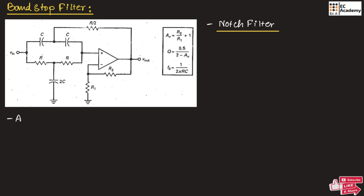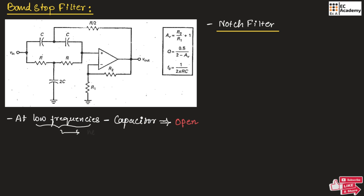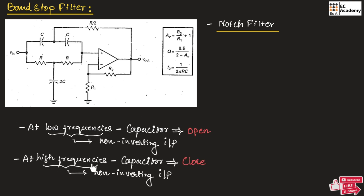At low frequencies, the capacitor will act as open circuit. Hence, these low frequencies will reach the non-inverting input. And at high frequencies, the capacitor will act as closed circuit. Hence, all the high frequencies will reach the non-inverting input.